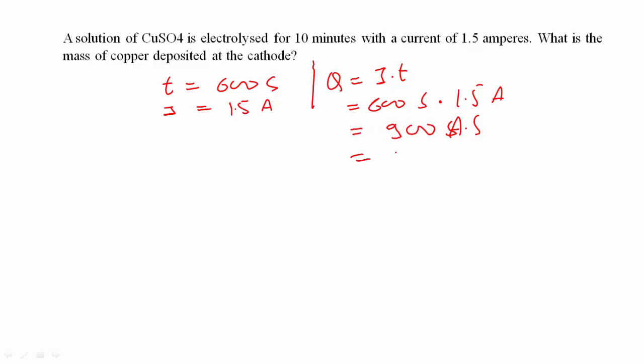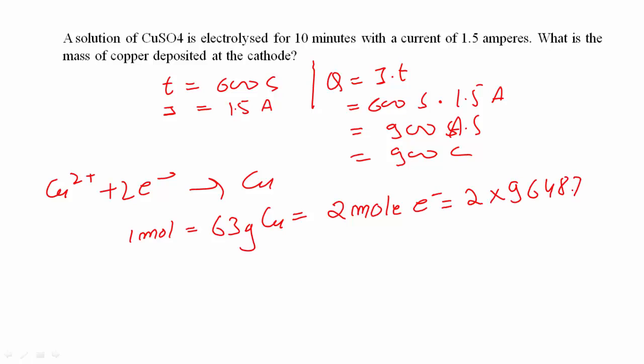Now the reaction is copper 2+ taking 2 electrons to produce copper. So 1 mole, that means 63 grams of copper, is produced by 2 moles of electrons. 2 moles of electrons means 2 into 96487 coulombs of electricity, because 96487 is the charge on 1 mole of electrons, and this is also known as 1 faraday of charge.